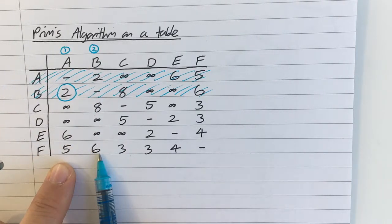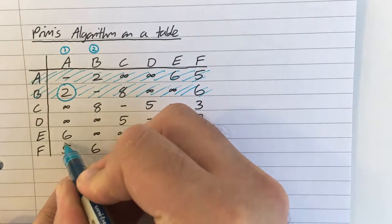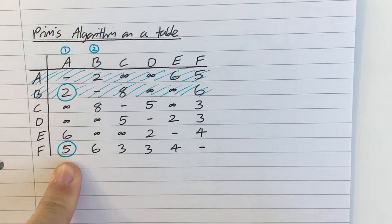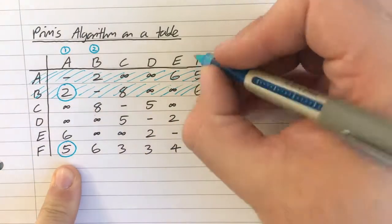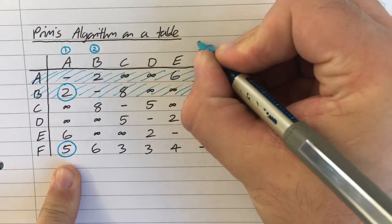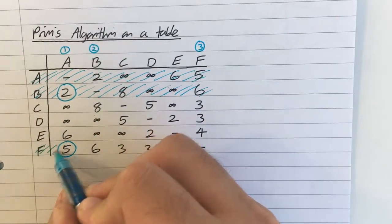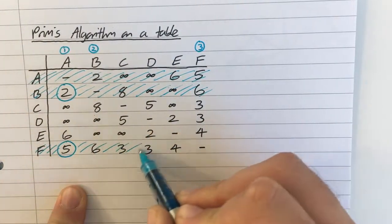And I would find that, actually, it is node F, but from node A. Okay, so that's the smallest number. So, therefore, F is now part of my tree, so that gets a 3 above it. And that now gets crossed off, so I don't go back to F by mistake.